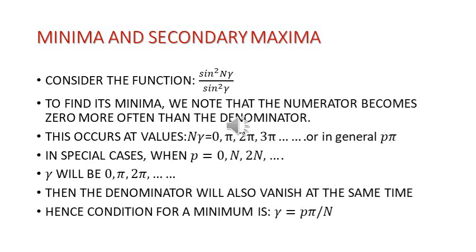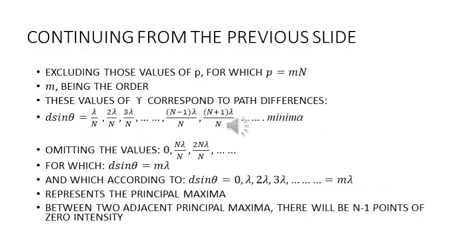The values of γ will become 0, π, 2π, and so on. It is then that the denominator will also vanish at the same time. Hence the condition for a minima is obtained whenever γ is equal to pπ/n.